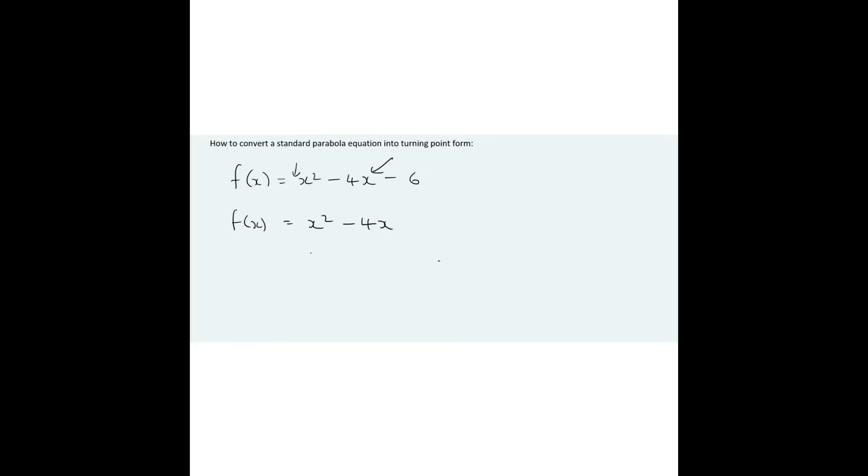Then you add this new piece, which is going to be plus. Then you open up a bracket squared, and the number that you're going to put in here is whatever this number is over 2, like that.